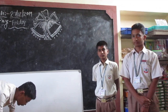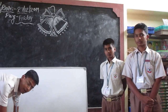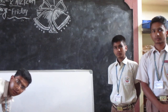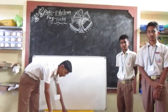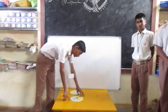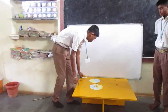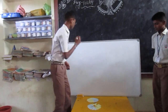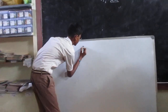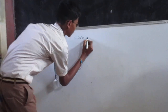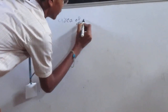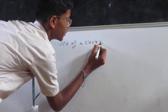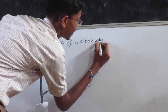This circle is also made up of yellow and blue. Blue indicates half of the circle and yellow indicates the other half. To prove that the area of a circle is equal to pi r square.